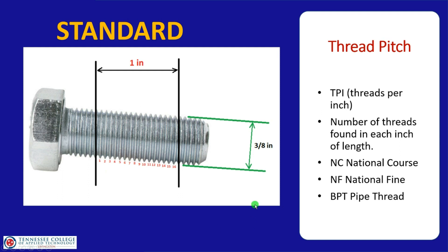The second thing we use is the thread pitch, or threads per inch. In a one-inch span you can count 16 threads in this example. Terms you'll see include NC (national coarse) or NF (national fine). There's also BPT pipe thread and NPT pipe thread, which we'll talk about a little later.